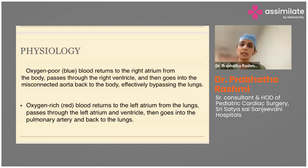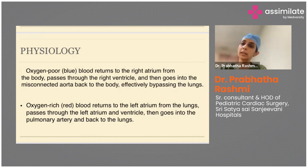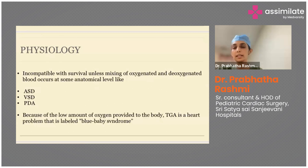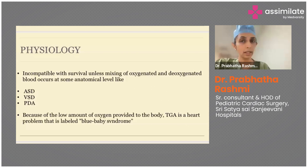Regarding physiology: deoxygenated blood returning to the right atrium from the body goes to the right ventricle and effectively bypasses the lungs. Oxygenated blood returning from the lungs goes to the left atrium, left ventricle, then back into the pulmonary artery and back to the lungs. This is incompatible with survival unless there is mixing of oxygenated and deoxygenated blood. Mixing occurs at three anatomical levels: at the atrial level via an ASD, at the ventricular level via a VSD — though VSD is not as good a mixer as ASD — and via a PDA.